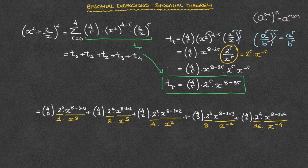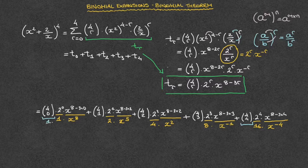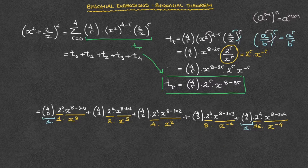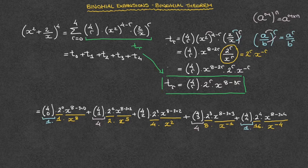Now that all the powers of 2 and of x have been taken care of, all we have to do is find the value of each of the binomial coefficients. The first and the last binomial coefficient will always be equal to 1, so we can just write that straight away. Next, the second coefficient from left to right, as well as the second coefficient from right to left — those are the coefficients 4,1 and 4,3 — are both always equal to the power to which we raise the binomial, so in this case 4. So 4,1 is equal to 4, and 4,3 is also equal to 4.